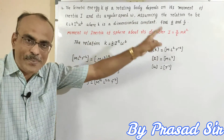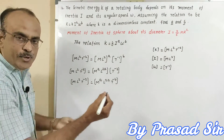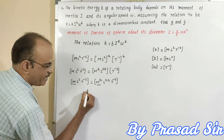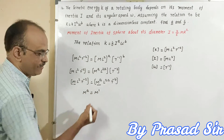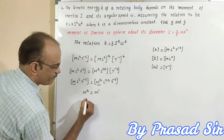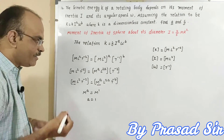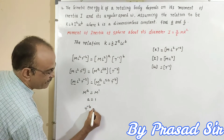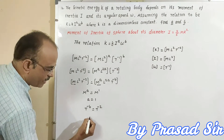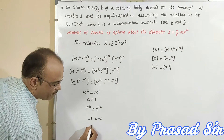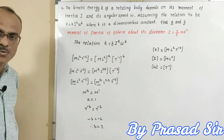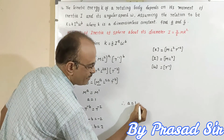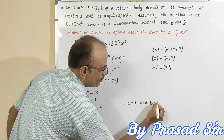To get the values of a and b, we equate the terms. For a: M to the power of a equals M to the power of 1, so a equals 1. To calculate b: T to the power of minus b equals T to the power of minus 2, so minus b equals minus 2, therefore b equals 2. We have solved both values: a equals 1 and b equals 2.